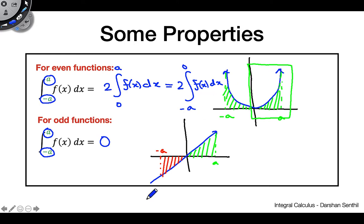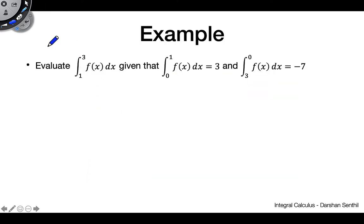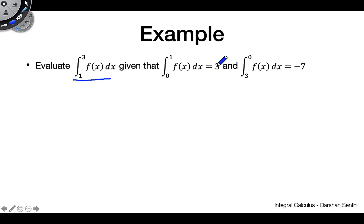Let's do a quick example. We want to find the integral from 1 to 3 of f(x) dx, given that the integral from 0 to 1 of f(x) is 3, and the integral from 3 to 0 of f(x) is −7. We're not told what f(x) is, but we can use our properties with these two pieces of information to get the answer.